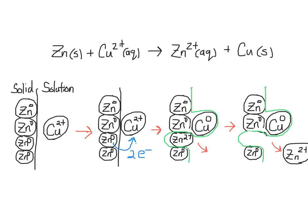Here's an example of a redox reaction where zinc solid reacts with copper 2+. The zinc is oxidized into zinc 2+, and the copper is reduced into copper solid.